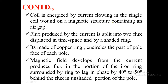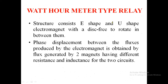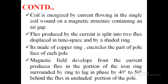The coil is energized by current flowing in a single coil wound on a structure containing an air gap. Due to this, a flux is produced which splits into two in time and space by the shaded ring, which also encircles part of the pole face of each pole. The magnetic field developed causes the flux in the portion of the iron ring to lag in phase by 40 to 50 degrees behind the flux in the unshaded portion of the pole.